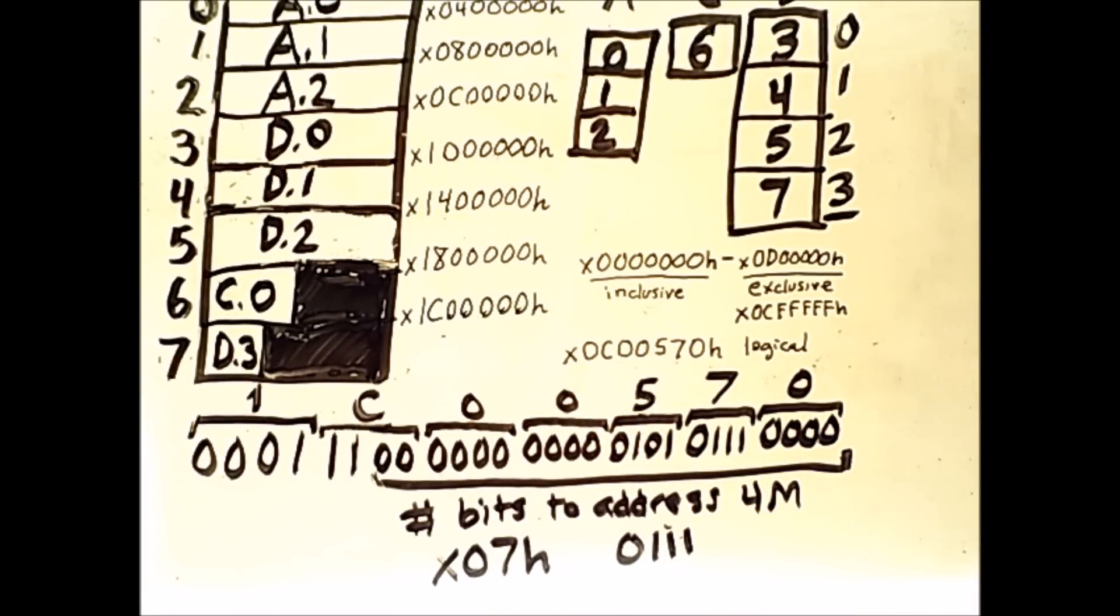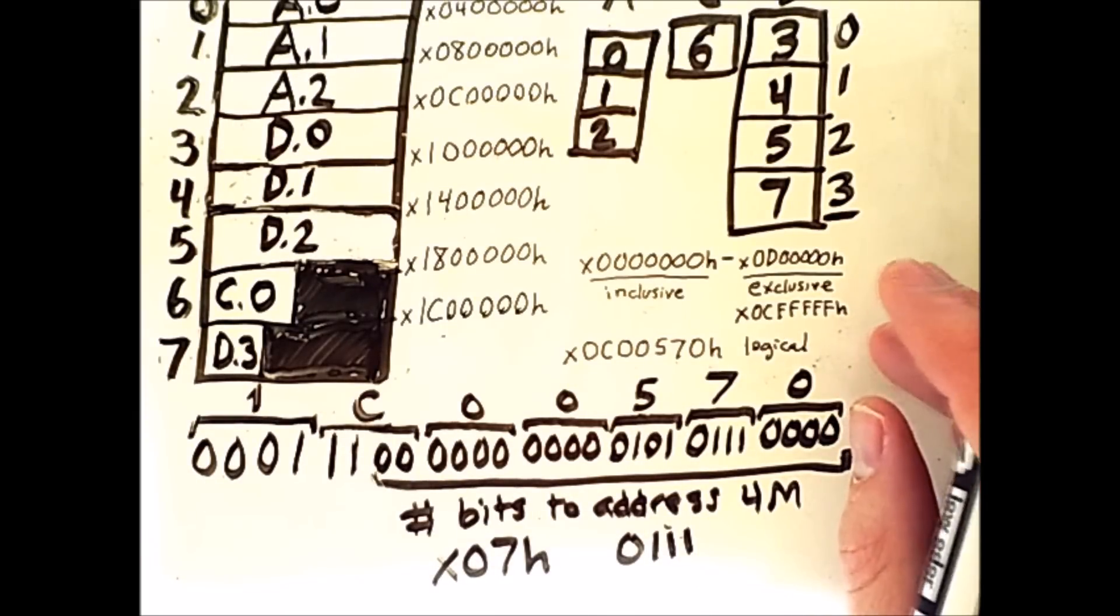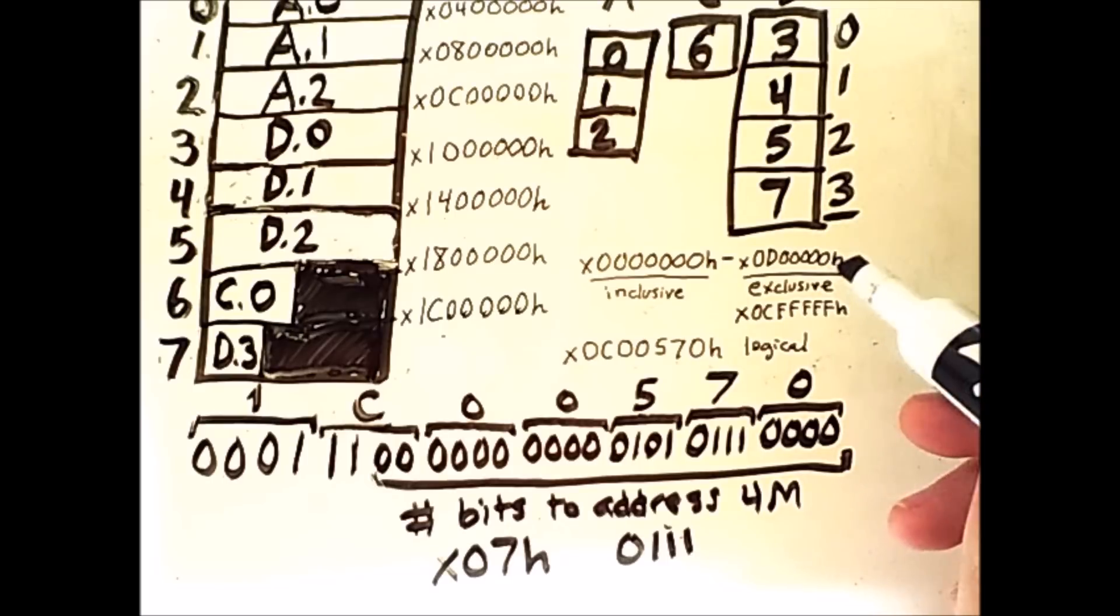And that is how paging is able to take a logical address with respect to a process and use a page table and decode it into a physical address in memory.